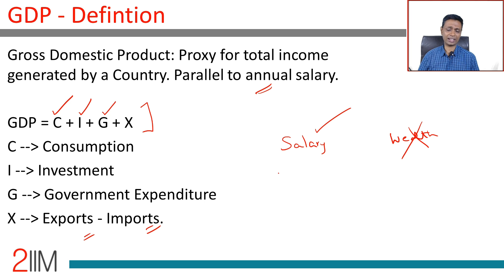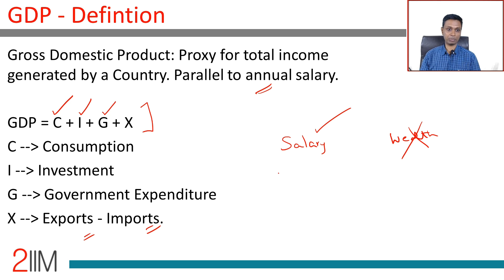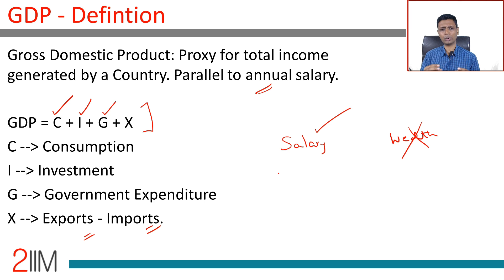G is government expenditure — anything the government spends on building bridges, giant dams, or huge infrastructure goes into G. Exports minus imports — net exports — goes into X. This is what goes into computing GDP; GDP is the sum of all of this. We're going to go deeper into fiscal stimulus, monetary stimulus, and how to increase C or decrease I — but not now. In this video, we're going to keep it simple.